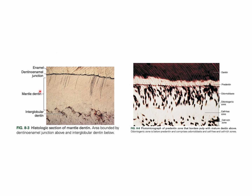Under the mantle dentine, sometimes we find small black structures that look like triangles. You will learn in the dentine genesis lecture that dentine mineralization happens as calcospherites, and sometimes the area between the calcospherites is not fused — it stays uncalcified. That is what we see here in the interglobular area: areas of uncalcified interglobular dentine under the mantle dentine.